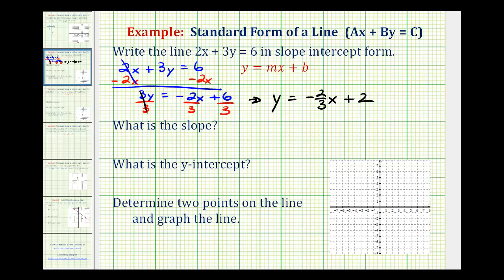And now that it's in this form, we should be able to identify the slope and the y-intercept. So the slope of the line is going to be negative 2/3.